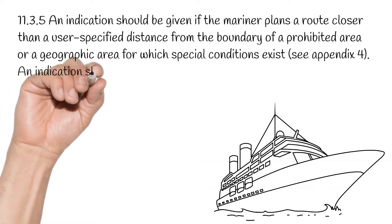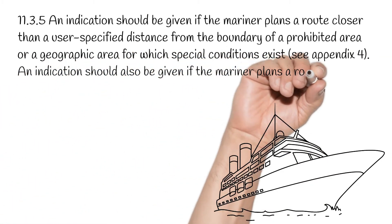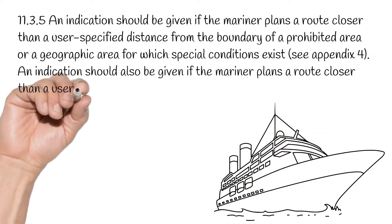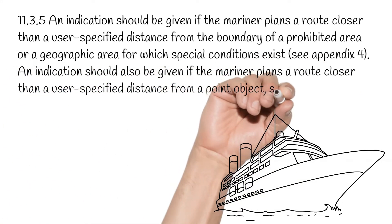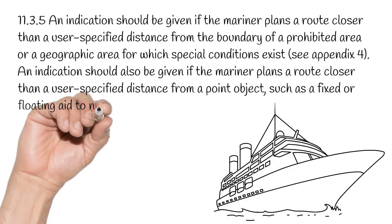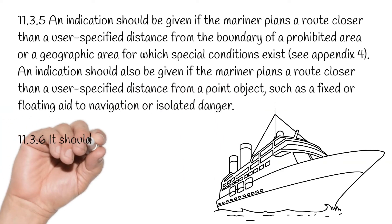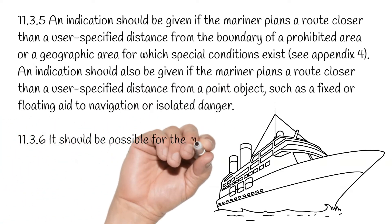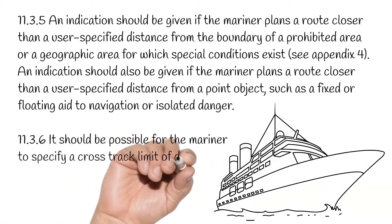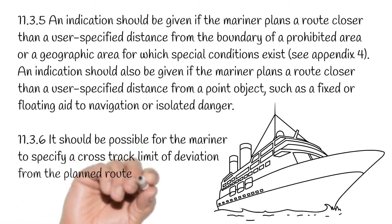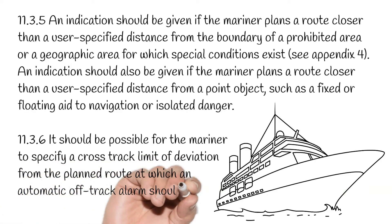11.3.5. An indication should also be given if the mariner plans a route closer than a user-specified distance from a point object such as a fixed or floating aid to navigation or isolated danger. 11.3.6. It should be possible for the mariner to specify a cross-track limit of deviation from the planned route at which an automatic off-track alarm should be activated.